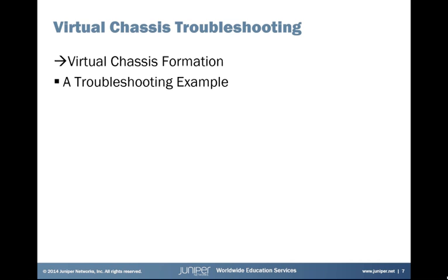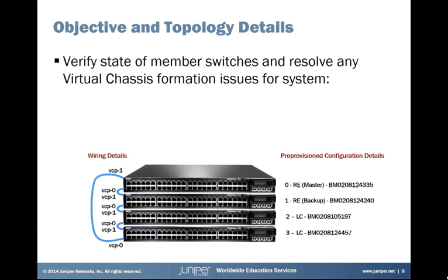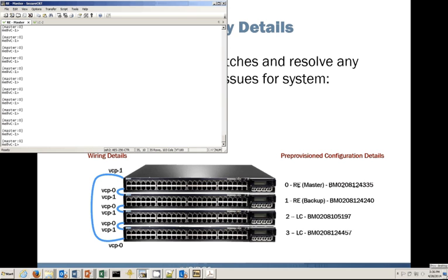Now we'll move into the second portion of the learning byte: a demonstration and troubleshooting example. We've got a four-member virtual chassis, and this is a pre-provisioned virtual chassis with the configuration details shown on the slide. The first thing you'll want to do is verify the current status, which you can do with the show virtual chassis status command.